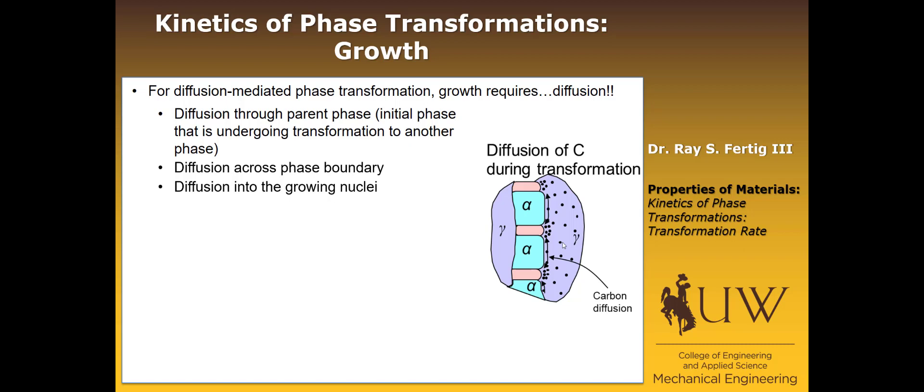And so we hopefully expect that the growth rate will take the same form as the diffusion coefficient does. And so this looks just like an Arrhenius form, where G dot is the growth rate,